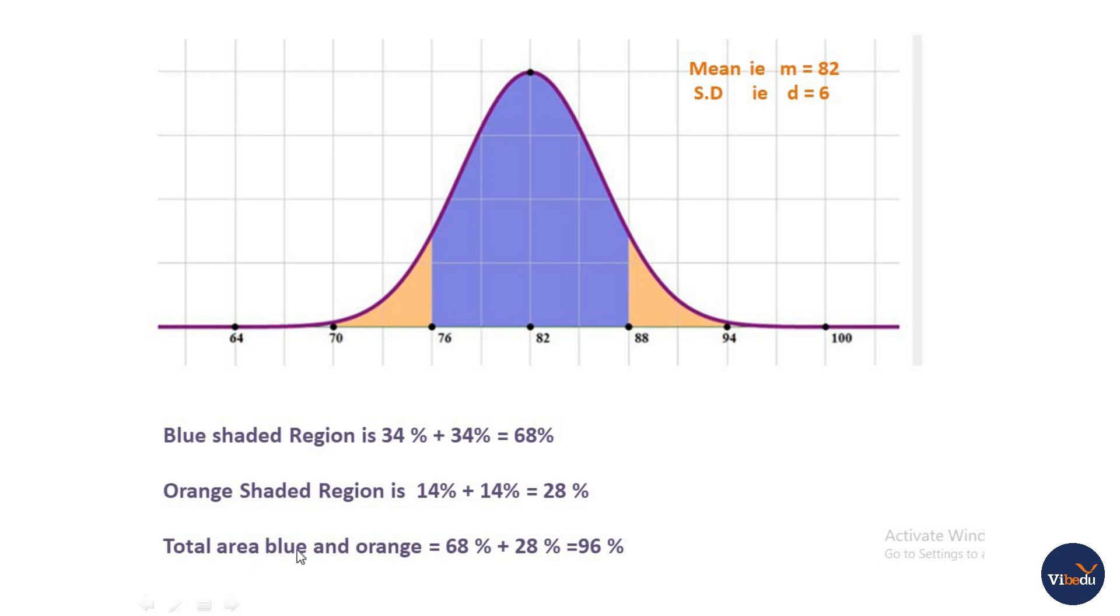So total area is blue and orange shaded regions, 68 plus 28 is 96%.